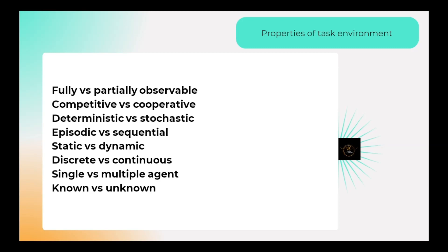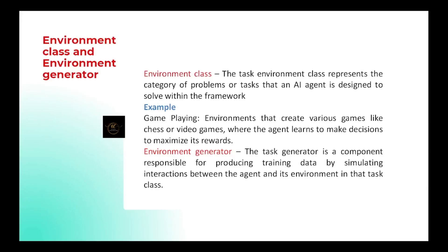Known versus unknown: a known environment is one where the agent has information about the environment. In an unknown environment, the agent must discover the environment and learn what actions to take. Finally, environment class represents one class of task that an agent performs — for example, one game with its actions and tasks. An environment generator is used to train the agent on that task.